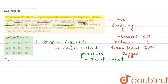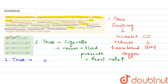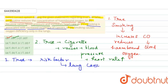Statement C is that smoking is associated with increased incidence of cancers — that is also true. Cigarette smoking is the number one risk factor for lung cancer.